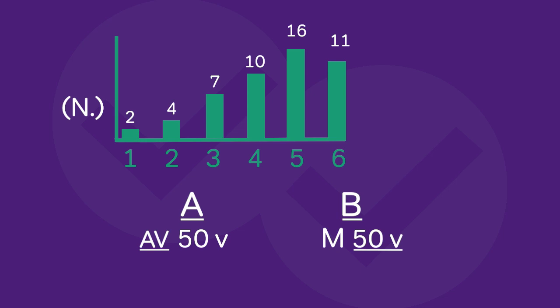So what does that mean? Well, look at score 5 — we have 16 values there. If we start at integer value 6 where we have 11, then add another 16, we're already at 27. So the middle value is somewhere around here between positions 25 and 26. The median is clearly equal to 5.